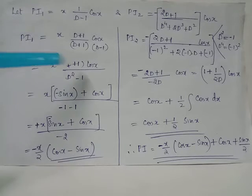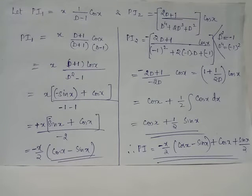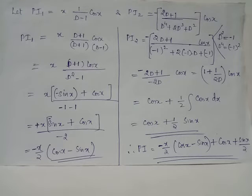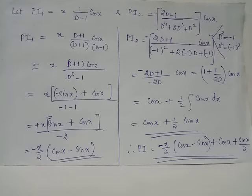Since the input is a trigonometric function of the form cos(ax), D² in the denominator is replaced by -a² = -1, giving the denominator as -2. In the numerator, (D + 1) acting on cos(x) gives the derivative of cos(x) plus cos(x), which is -sin(x) + cos(x). Hence PI1 = -x/2·(cos(x) - sin(x)).